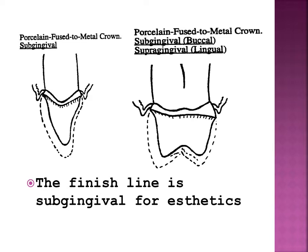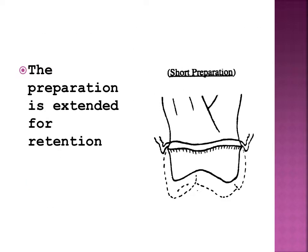Should the crown preparation end up too short for sufficient retention of the restoration, due to overzealous tooth reduction or necessary removal of caries, the gingival finish lines must be placed subgingivally to obtain all possible length to the axial walls of the preparation.